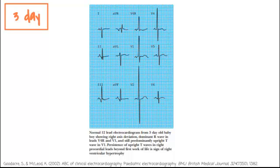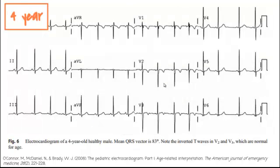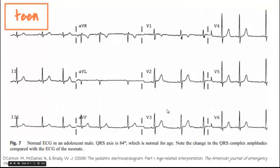Here are some examples by age. In a three-day-old, we see upright T waves in V1 and V2. At one week old, T wave inversion appears in V1 and V2. In a four-year-old, T waves are inverted throughout those leads. And finally, in a teenager, they're starting to flip back upright.